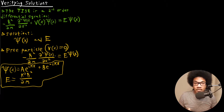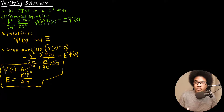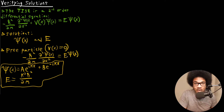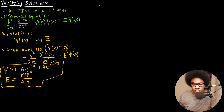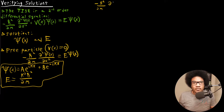What we want to do is take these solutions and verify that they are valid solutions to Schrödinger's equation for a free particle. That means we need to plug in the wave function and check that when we take the second derivative on the left-hand side, we get the energy times the wave function back on the right-hand side. We want to execute the operators on the left-hand side, so let's plug in on the left-hand side: negative h-bar squared over 2m times the second derivative of the wave function.